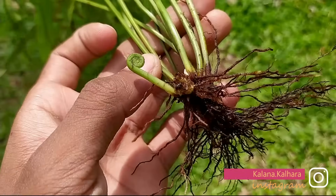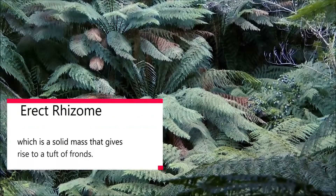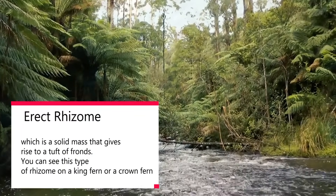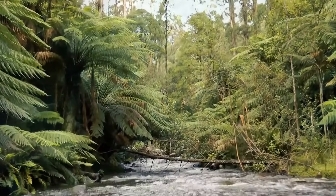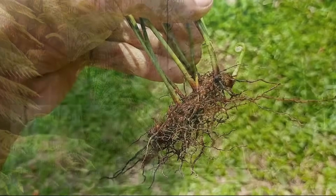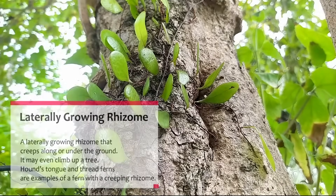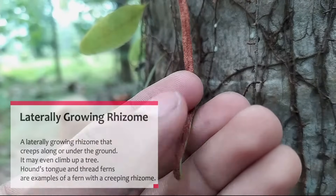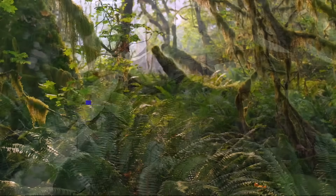The rhizome is the stem of the fern plant. It comes in three basic forms. An erect rhizome is a solid mass that gives rise to a tuft of fronds — you can see this type on a king fern or a crown fern. A laterally growing rhizome creeps along or under the ground and may even climb up a tree. Hound's tongue and thread ferns are examples of ferns with a creeping rhizome.